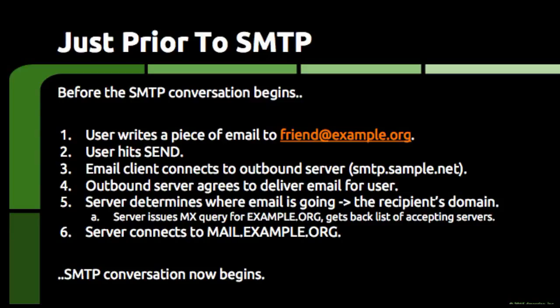The outbound server then does something interesting. It determines where the piece of email is going, and it does this by looking at the recipient's email domain. Once the recipient's domain is known, the outbound email server asks the global domain name system — almost always referred to as the DNS — for a list of servers that accept email on behalf of the recipient's domain.